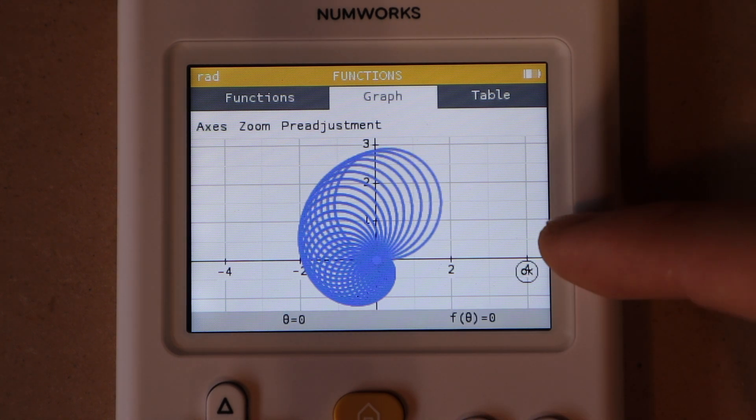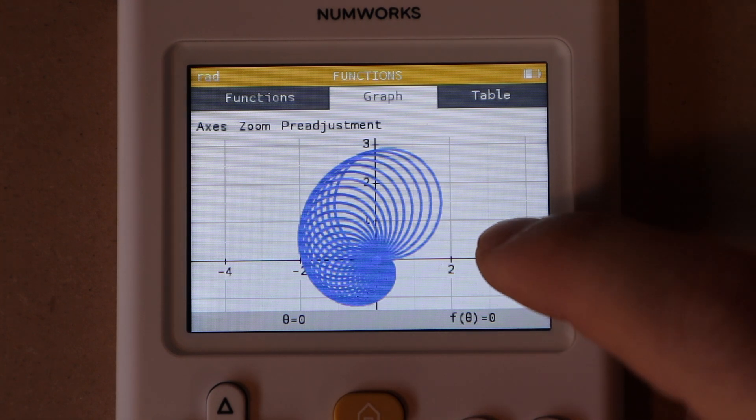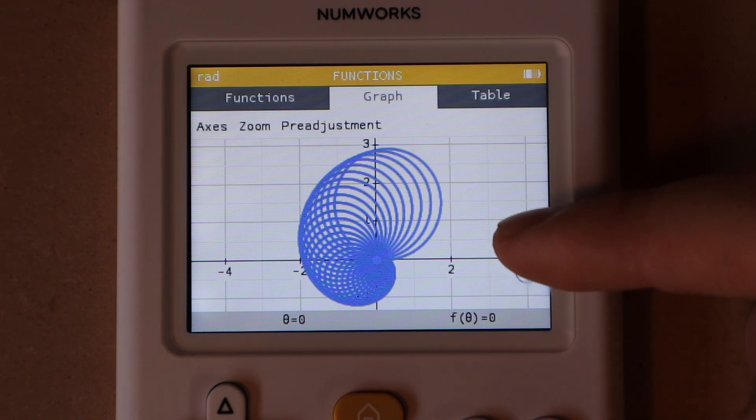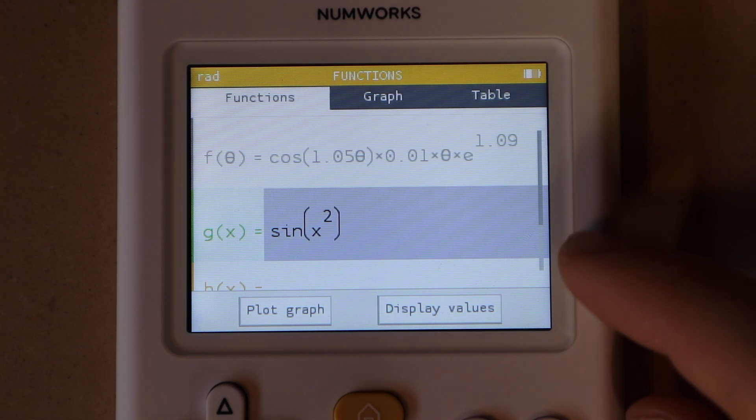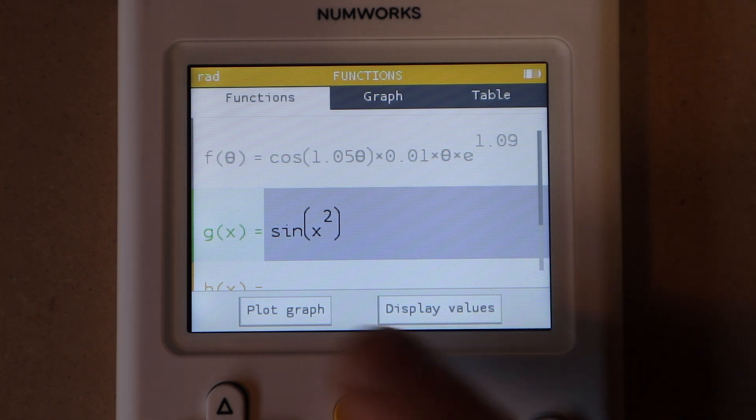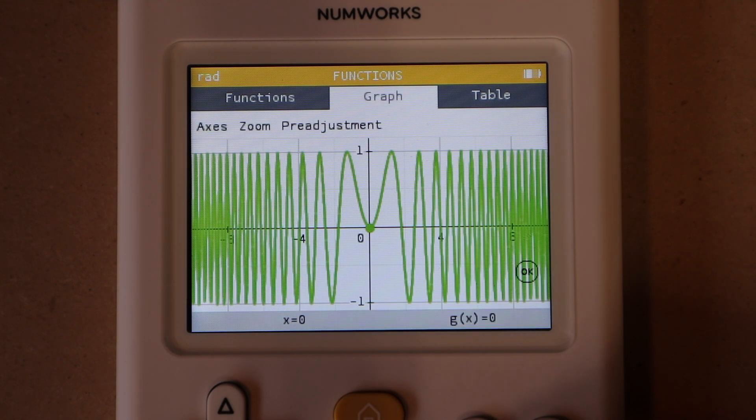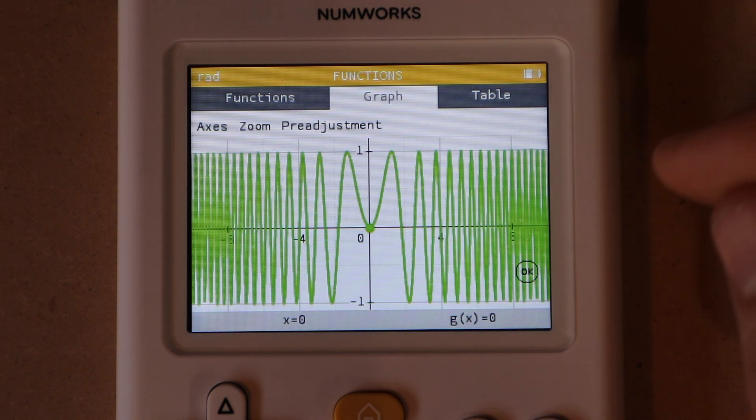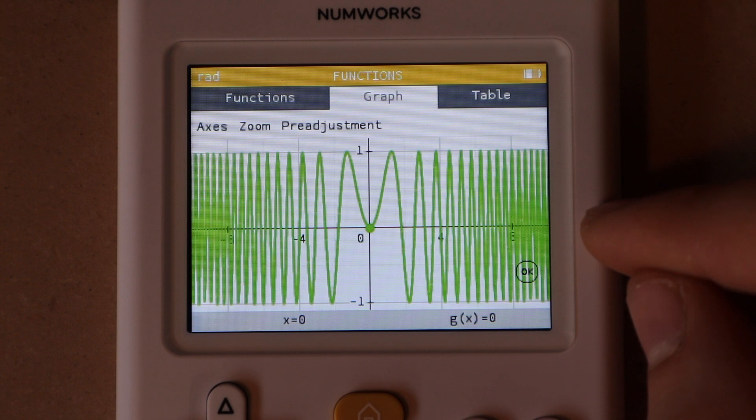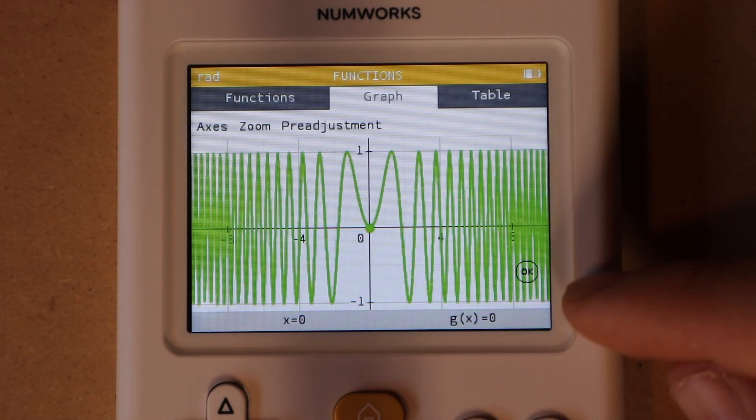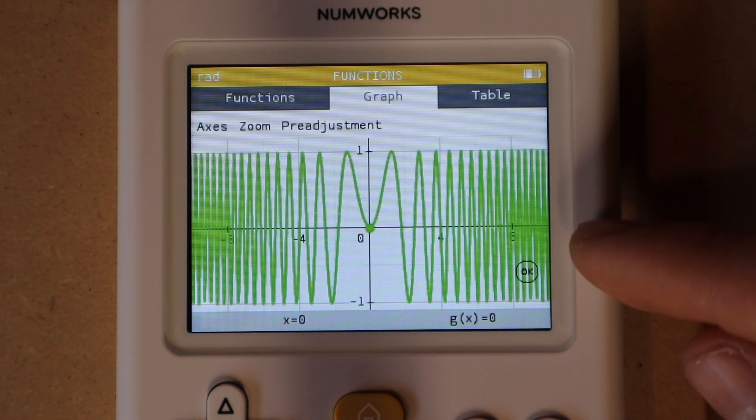You can use that graph I just did as sort of a gauge for the graphing speed of this calculator. So just as a final speed test I'll do this function that I often do, sine of x squared, and press execute. There we go, you can see it did that pretty fast. For the most part, graphing speed on this calculator is going to be fast enough for the vast majority of functions you are going to be graphing.